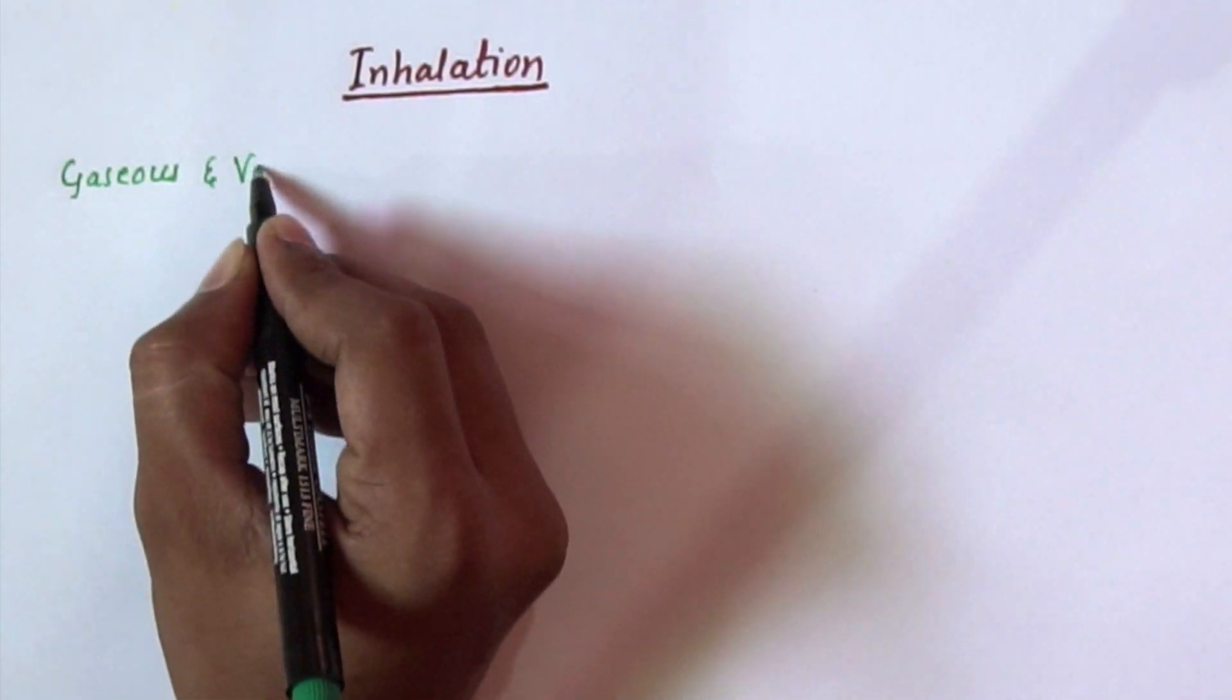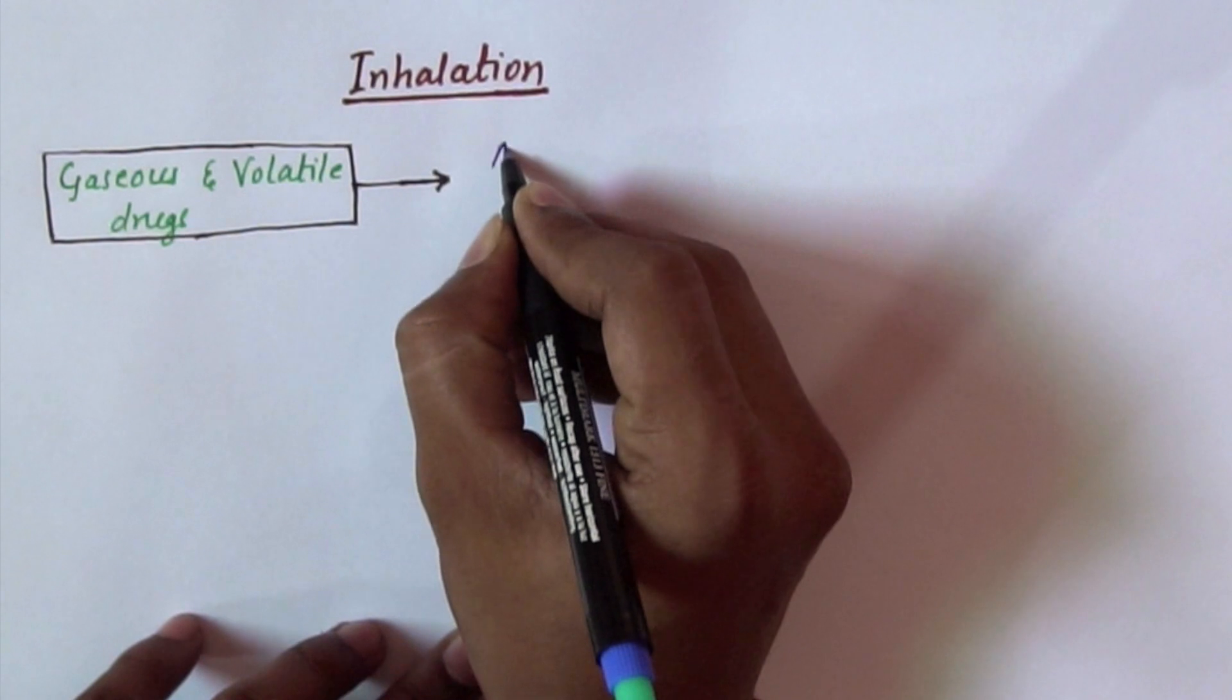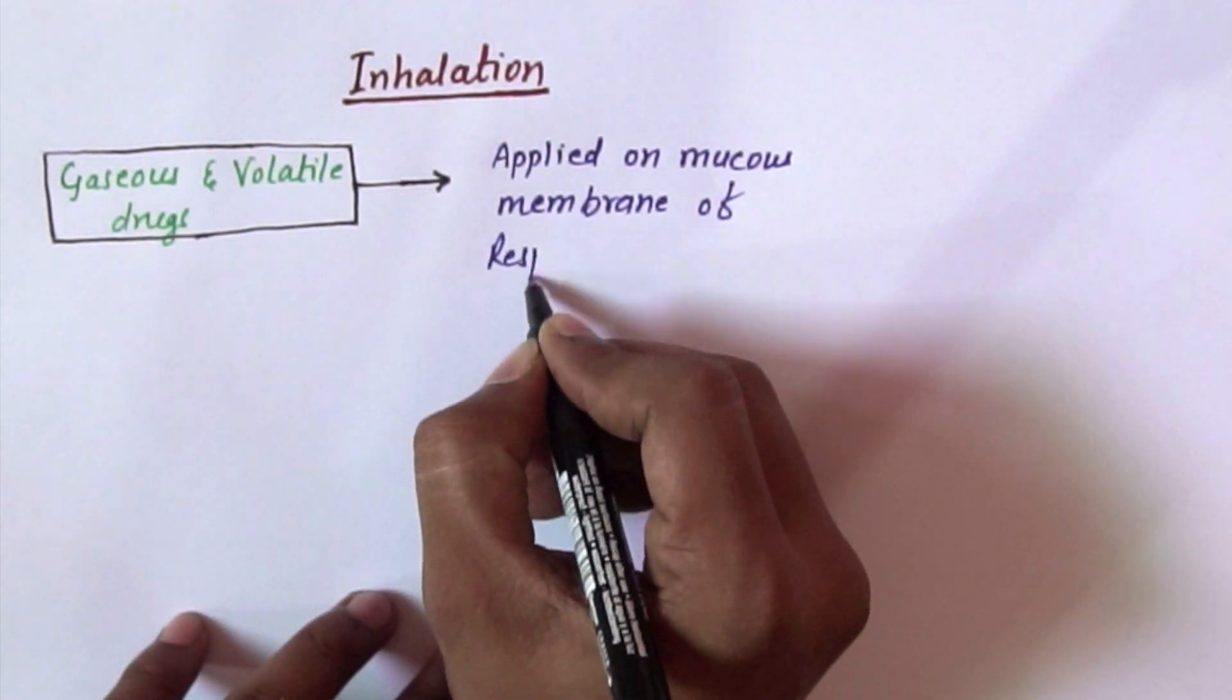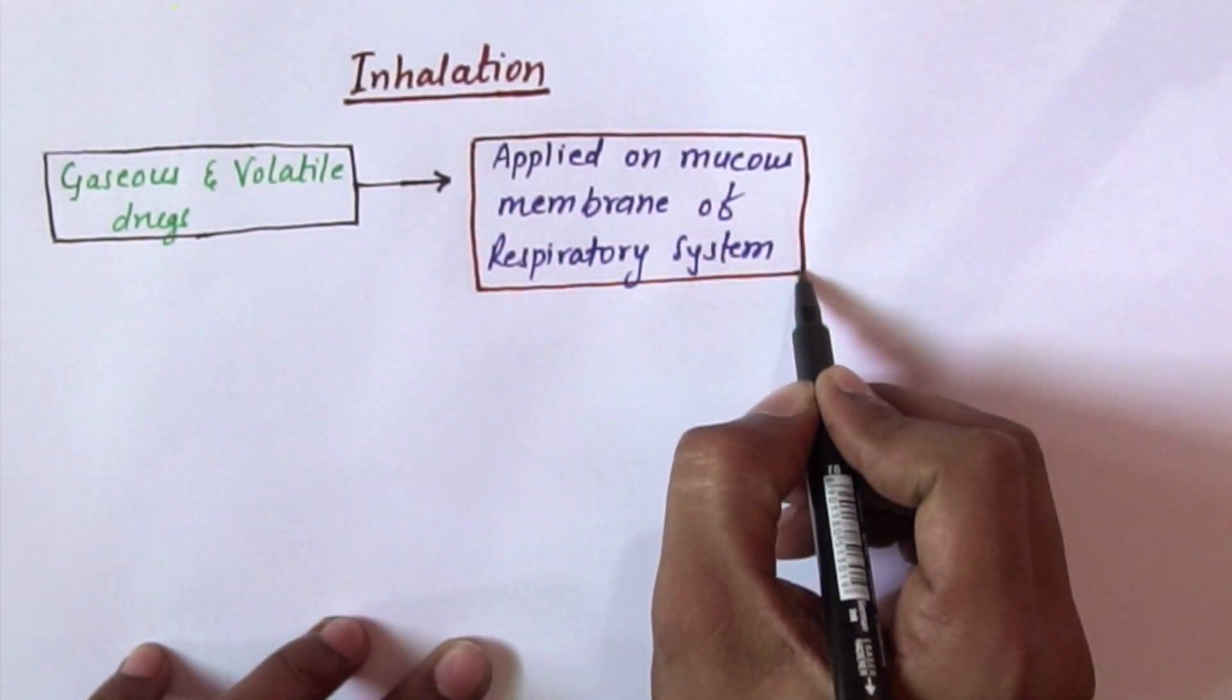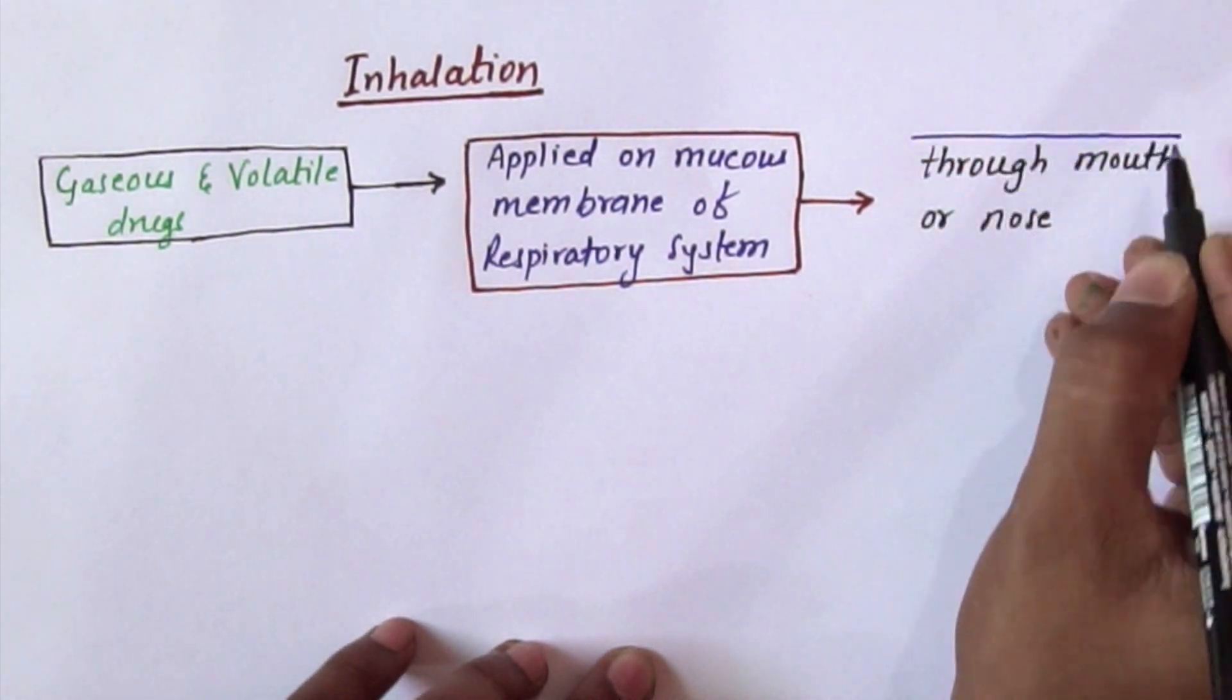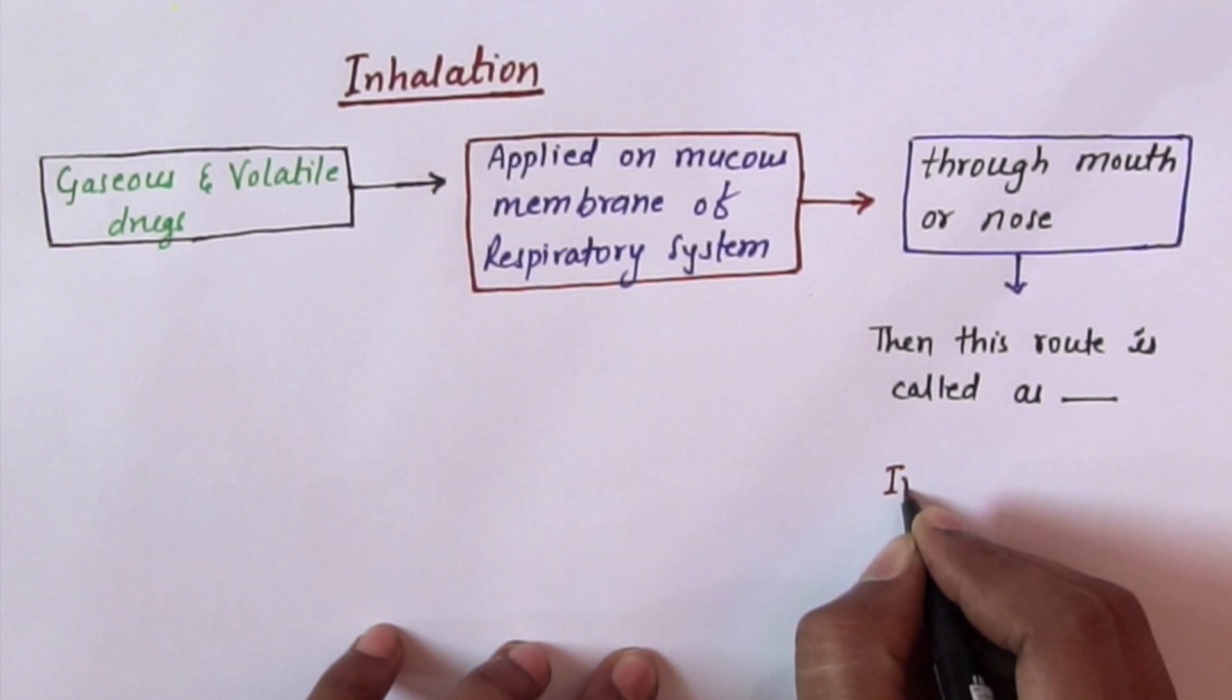Now we will discuss about inhalation. So gaseous and volatile drugs when applied on mucus membrane of respiratory system through mouth or nose, then this route is called as inhalation.